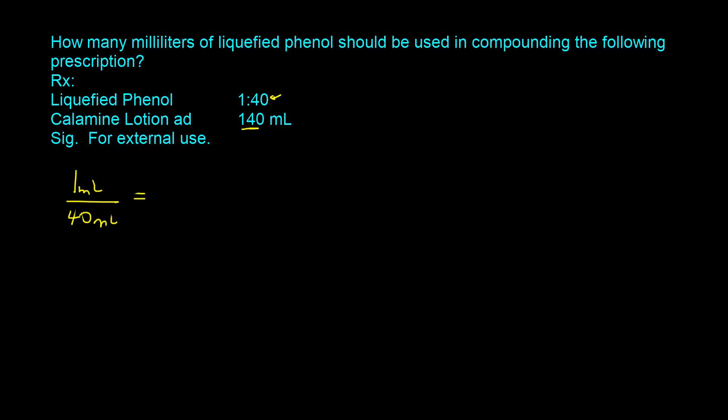We want to figure out how many milliliters we will need for the total preparation which will be 140 milliliters. So we can solve for x. X is going to be equal to 1 milliliter times 140 milliliters divided by 40 milliliters. One set of milliliters cancels out and that's going to be equal to 3.5 milliliters.